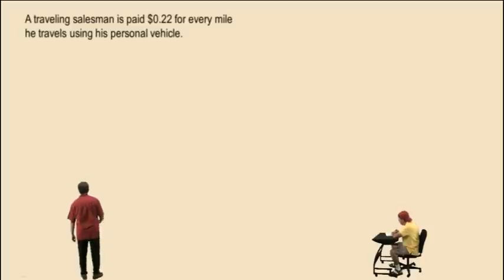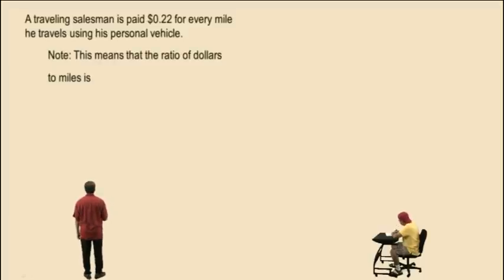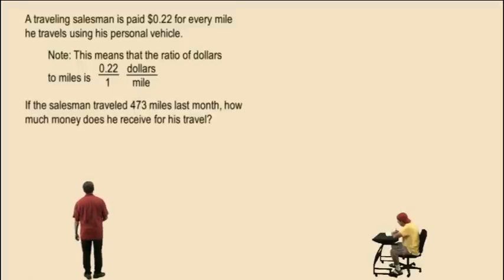Okay, let's do another one here. A traveling salesman is paid 22 cents, .22 dollars, for every mile he travels using his personal vehicle. Note, this means that the ratio of dollars to miles is, pay attention Charlie, .22 dollars per one mile, or 22 cents per mile, right? If the salesman traveled 473 miles last month, how much money did he receive for his travel?